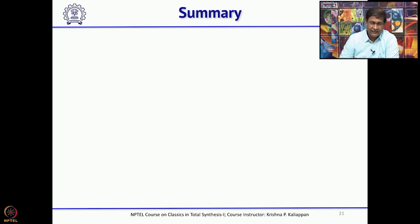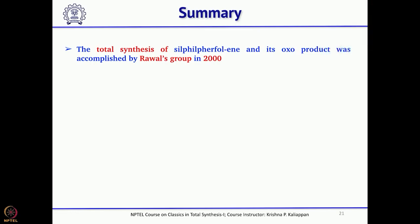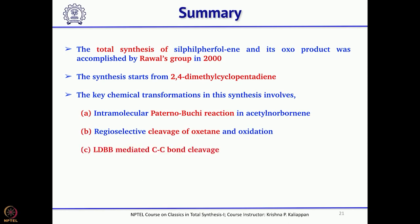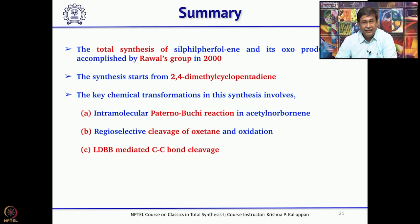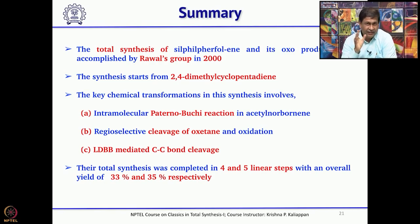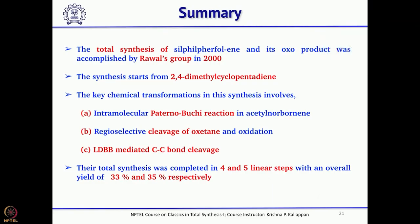Looking at this synthesis, both natural products were made in 4 and 5 steps respectively. This was reported by the Viresh Rawal group in 2000, starting from 2,4-dimethylcyclopentadiene. The key reactions are the intramolecular Paternò-Büchi reaction, cleavage of the oxetane, and cleavage of the C-C bond using LIDBB. The overall yield is extremely high — 33% and 35% for the synthesis of an angular triquinane — making this one of the most efficient syntheses of angular triquinanes reported by Viresh Rawal.